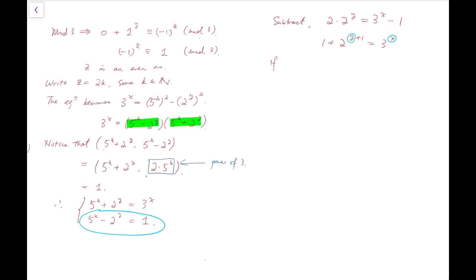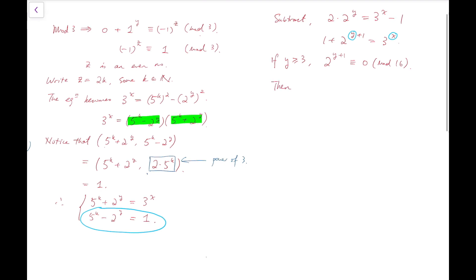Because I cannot find any other solution after y equals 2. So I would say, if y is at least 3, then the index of the power of 2 is at least 4. Because when y is at least 3, then y plus 1 is at least 4. So I can say that 2 to the y plus 1 is congruent to 0 mod 16. So that means 3 to the x is congruent to 1 mod 16.